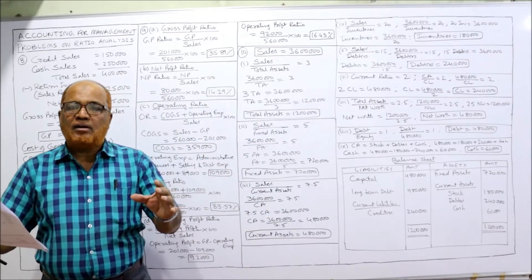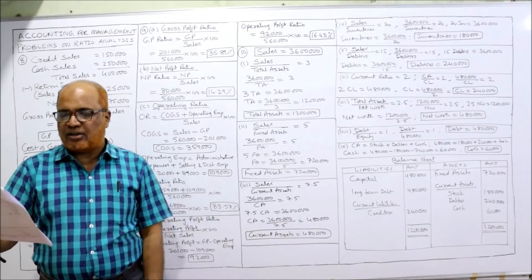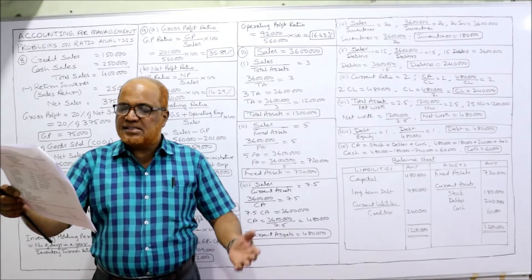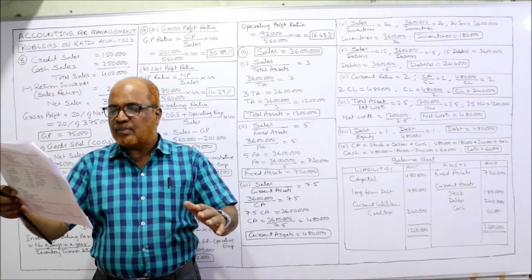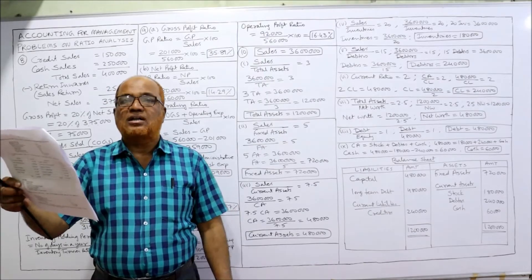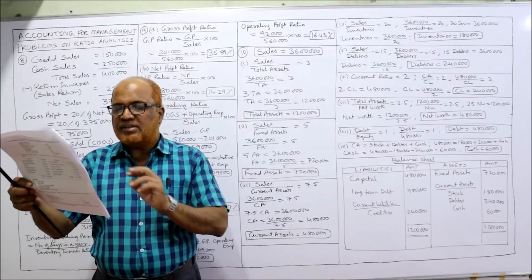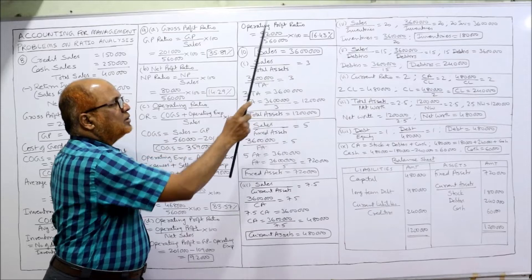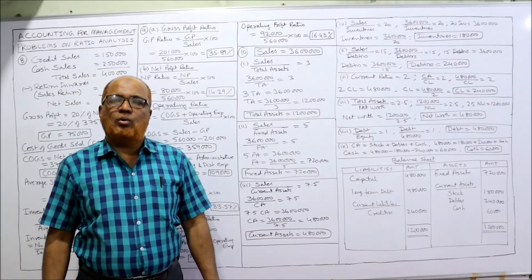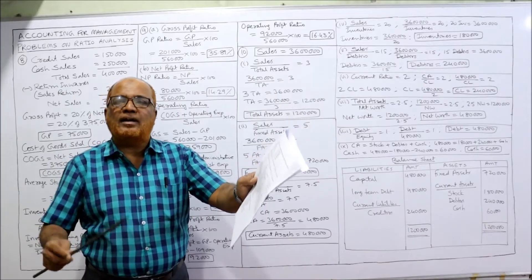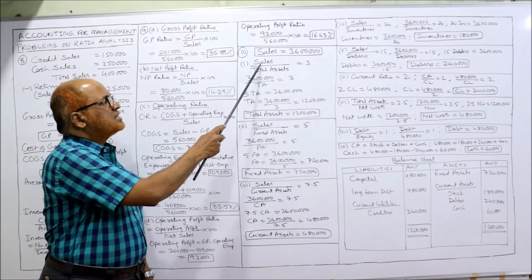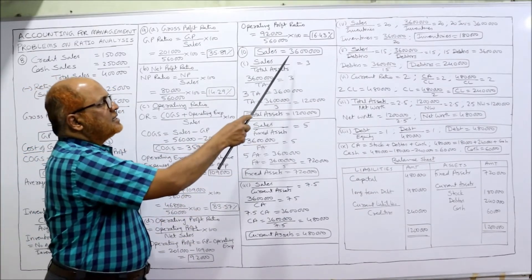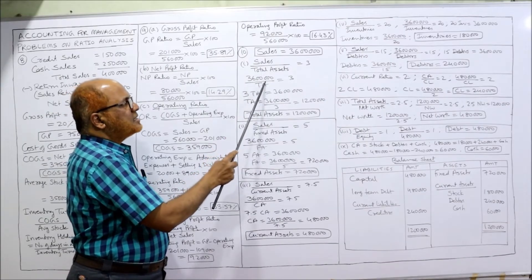Now the tenth problem: from the following particulars, prepare the balance sheet. Some ratios are given and working backwards we have to construct the balance sheet. Ratios given: sales by total assets = 3, sales by fixed assets, sales by current assets, sales by inventory, sales by debtors, current ratio, total assets by net worth, debt by equity. Sales are given as 36 lakhs. First, take sales equal to 36 lakhs and use each ratio to find different values.